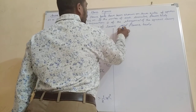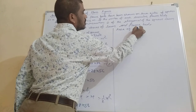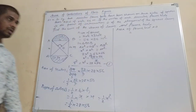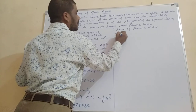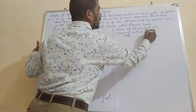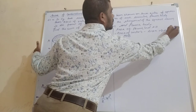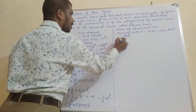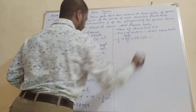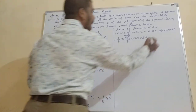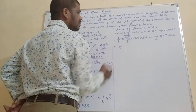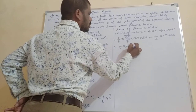Area of segment AOB = area of sector − area of triangle AOB. So it is (1/4) × (22/7) × 28 × 56 minus ½ × 28 × 56. Taking ½ and 28 and 56 as common factors: = ½ × 28 × 56 × (22/7 − 1).